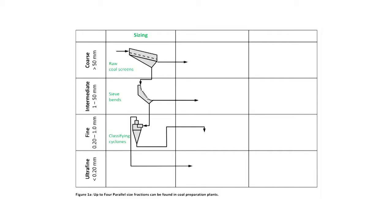Instead, coal plants screen and classify the run-of-mine feed into a series of size fractions referred to as coarse, small, fine, and ultra-fine. This series of figures shows that there are many different steps in the processes that follow. Each of the size fractions is treated in parallel, using cleaning methods that work best for that particular size fraction.